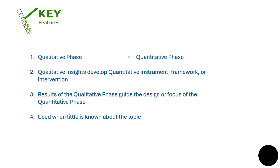The qualitative phase is conducted first and then it is followed by the quantitative phase, using the qualitative insights to inform the development of a quantitative instrument, framework or intervention. For example, a focus group will lead to the development of a quantitative survey questionnaire, or an interview will lead to the development of a quantitative survey questionnaire. The two phases are connected, with the results of the first phase guiding the design and focus of the second phase. This is typically used when you know little about the topic or when existing theories and instruments are insufficient.